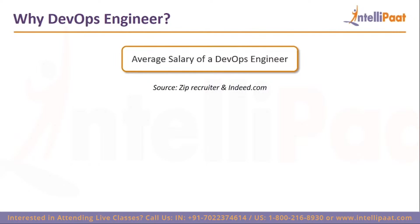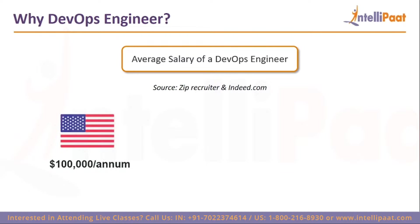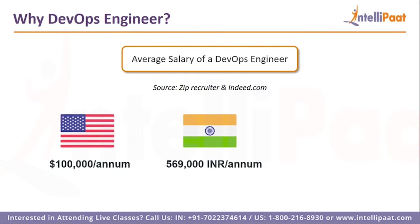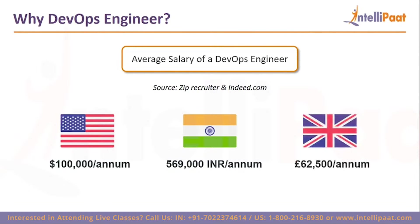To summarize the salary data: in the US the average salary is $100,000 per annum. In India, taking into account freshers as well as experienced roles like release manager, DevOps architect, and cloud DevOps architect, the average is five lakh sixty-nine thousand per annum. Senior professionals with 10 to 15 years of IT experience can earn up to 45 to 50 lakhs per annum in India. In the UK, the average is £62,500 per annum.